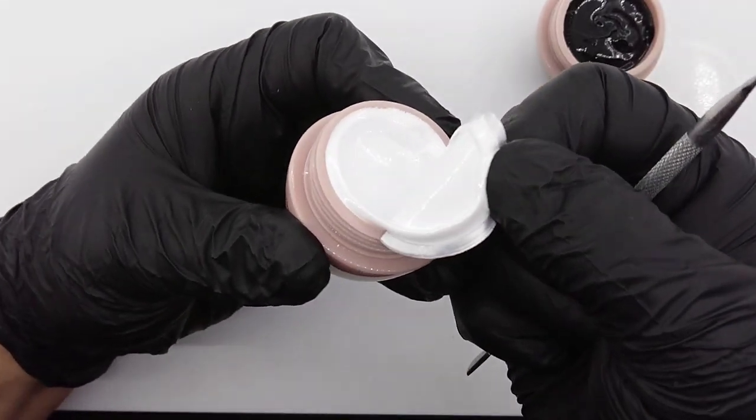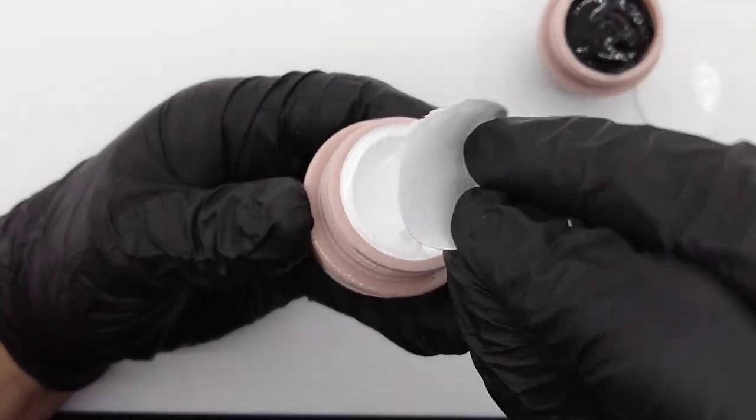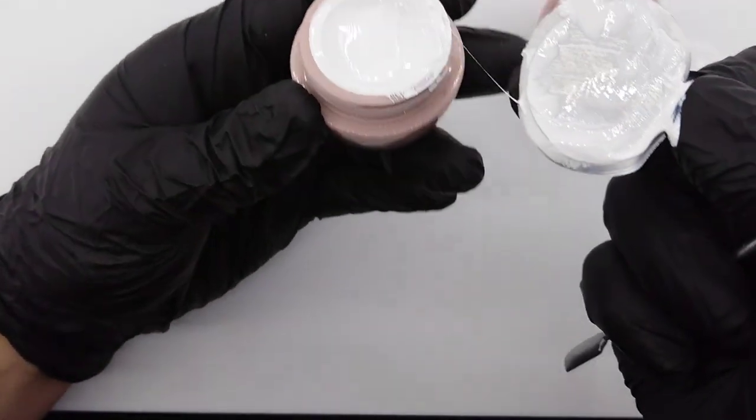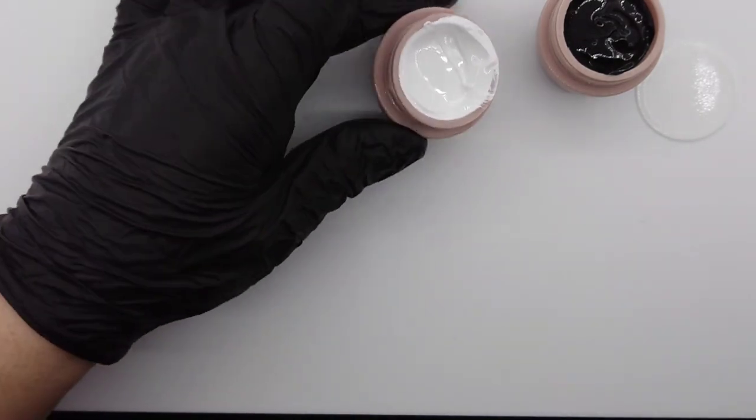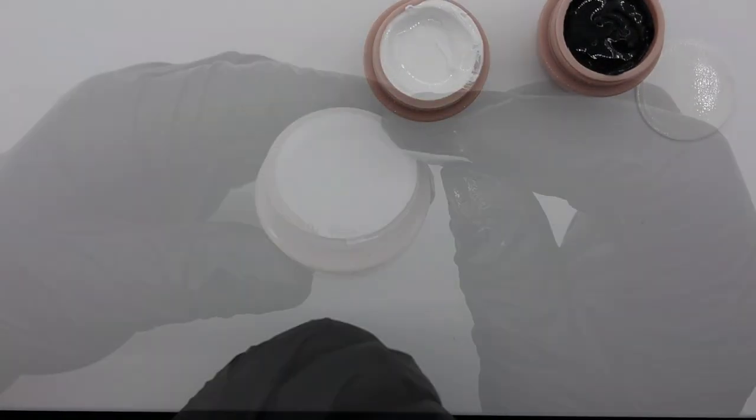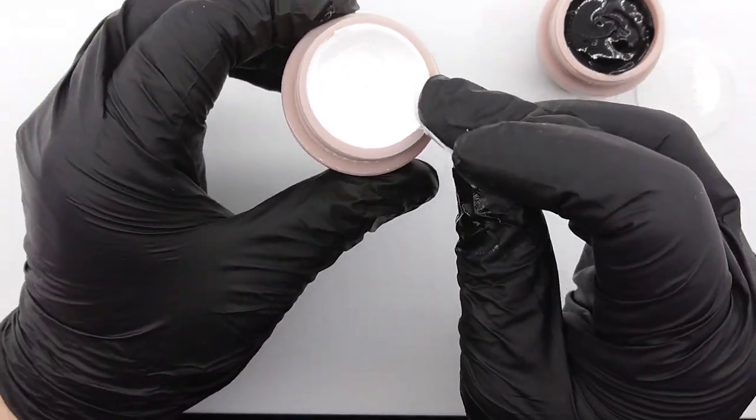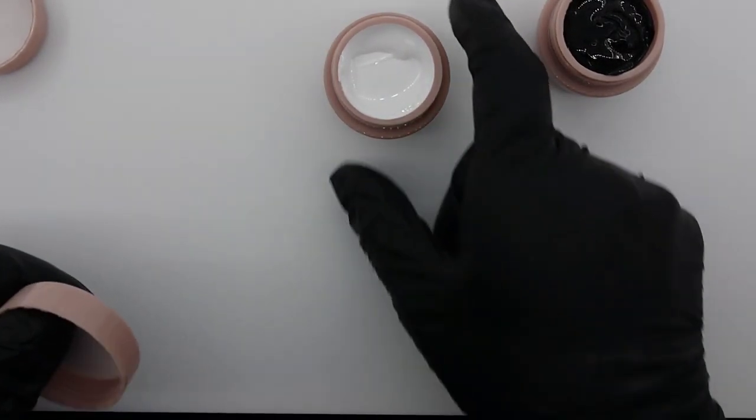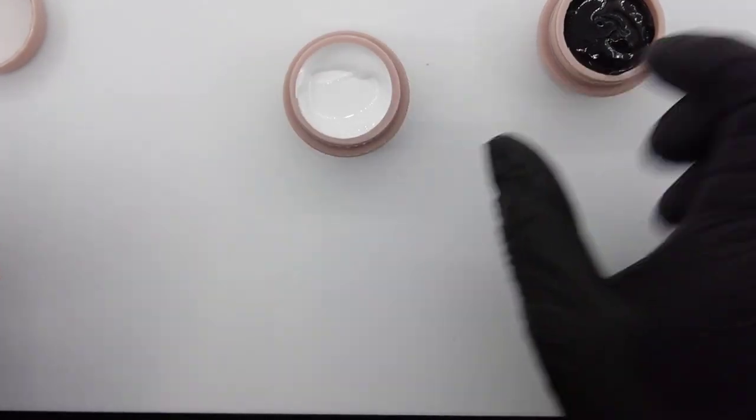So I'm just going to take this off and scoop it back into the pot because I don't want to waste it. Let me clean this up a little bit. I just used a little bit of alcohol on a wipe to get that off the edge so it's nice and clean.